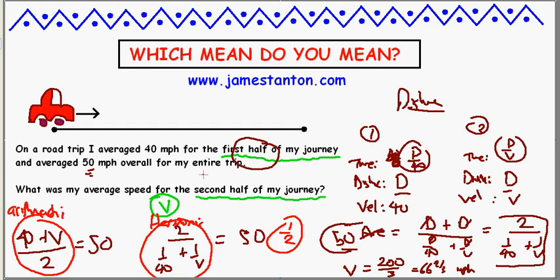So the question is, when you're given a question like this in a math book, you need to ask, which mean do you mean? Do you mean half the distance, equal distances in half, or equal times in half?